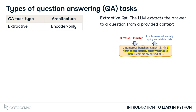In extractive QA, the model receives a question and a context, and the answer is extracted directly from the context. This supervised learning task requires an encoder architecture.